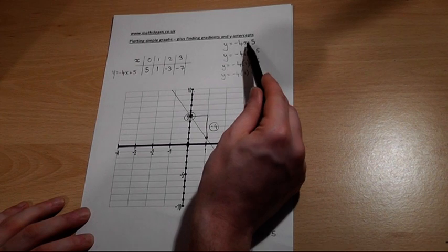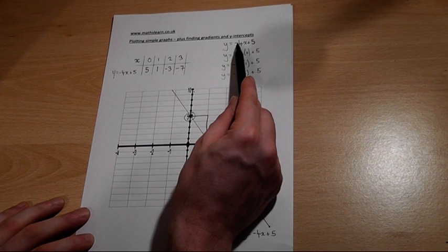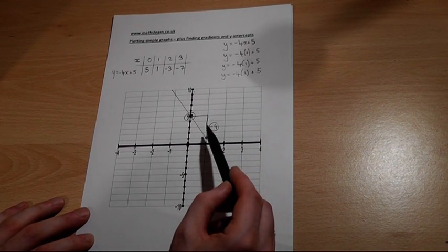So again, this number here is always the y-intercept. The coefficient or number before x is always the gradient.